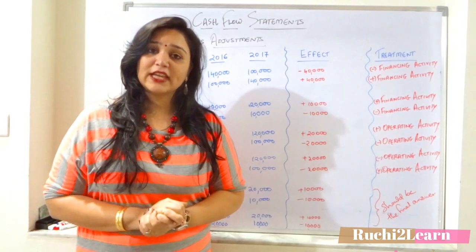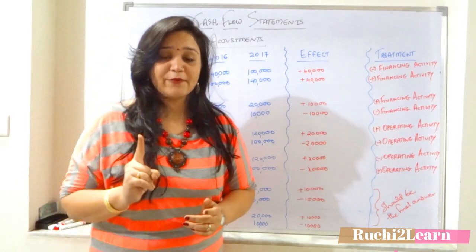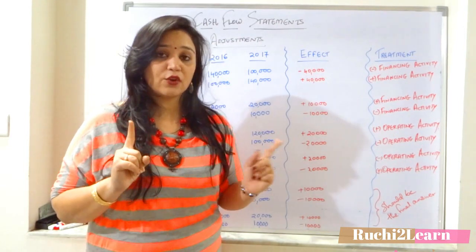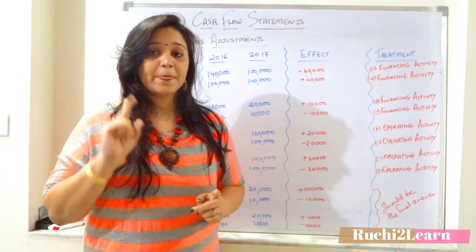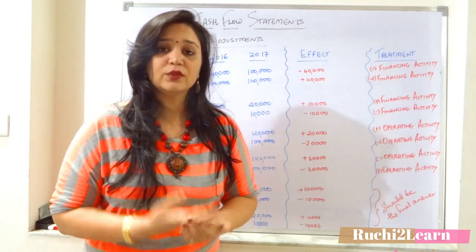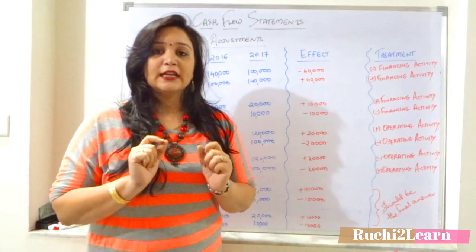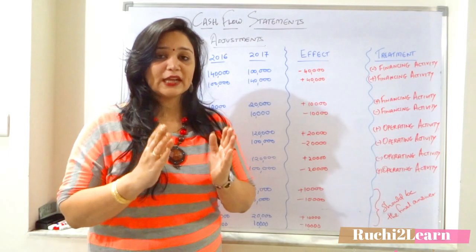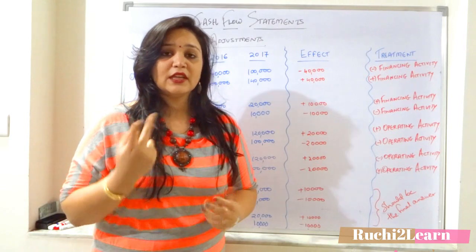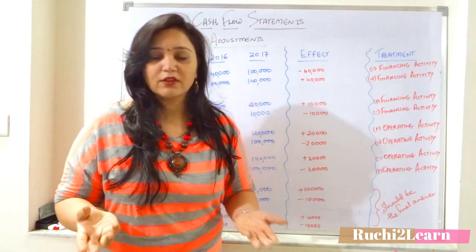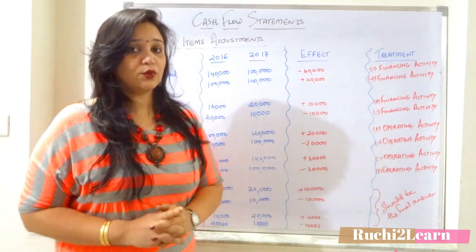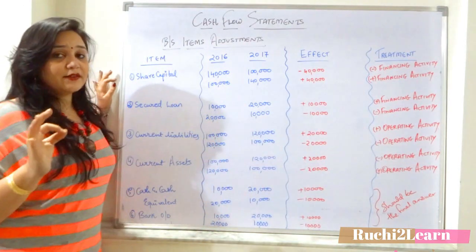To solve the cash flow statement sum, step one should be to draw your cash flow statement format, which I taught you in the earlier lecture. Step two: take the question in front of you, take the balance sheet. In that we will find the liabilities and asset side, with two years given — maybe 2016 and 2017 or whatever years are in the question. Now we'll go through how to approach each and every item.